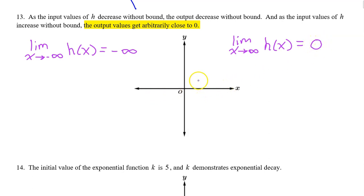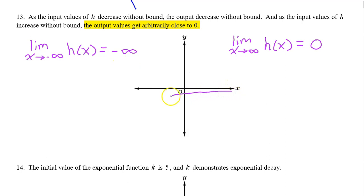Now it's time for the sketch. I recommend starting with the negative infinity instead of the zero. The limit as x approaches negative infinity of h of x is negative infinity. This means as we go towards the left, this graph is falling. So let's draw that — as we go to the left, the graph is falling. I've also drawn it so that as we go to the right, the graph is approaching zero. In other words, the limit as x approaches positive infinity equals zero.